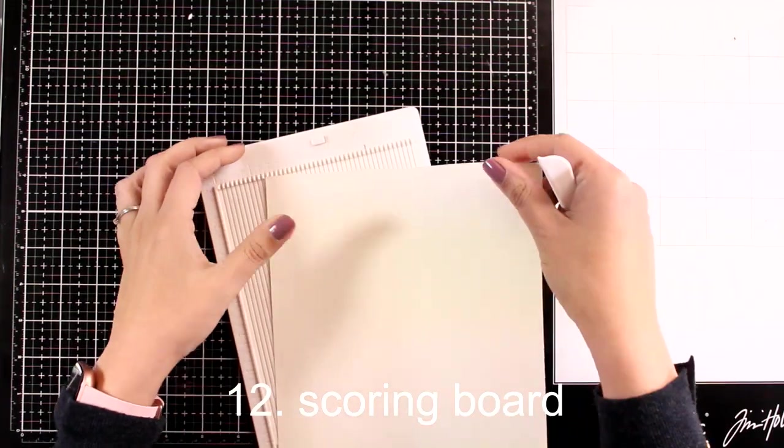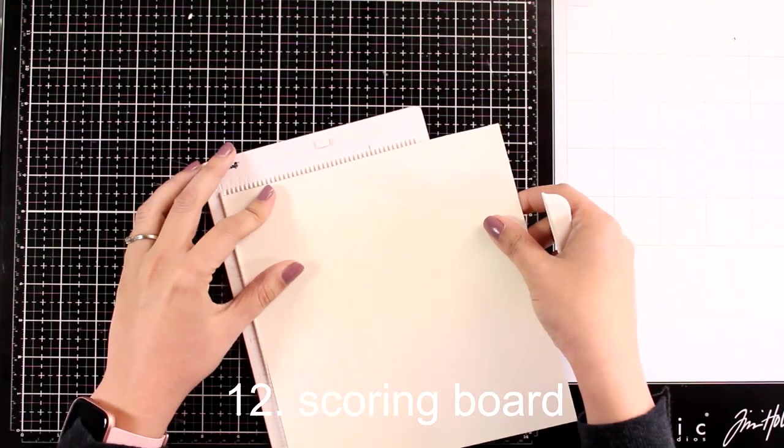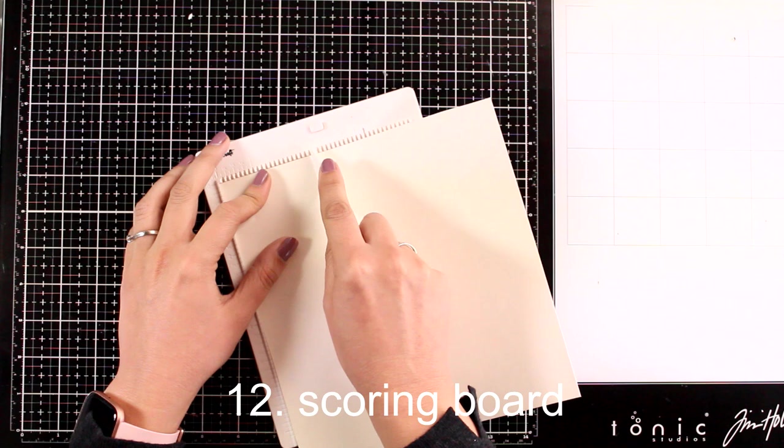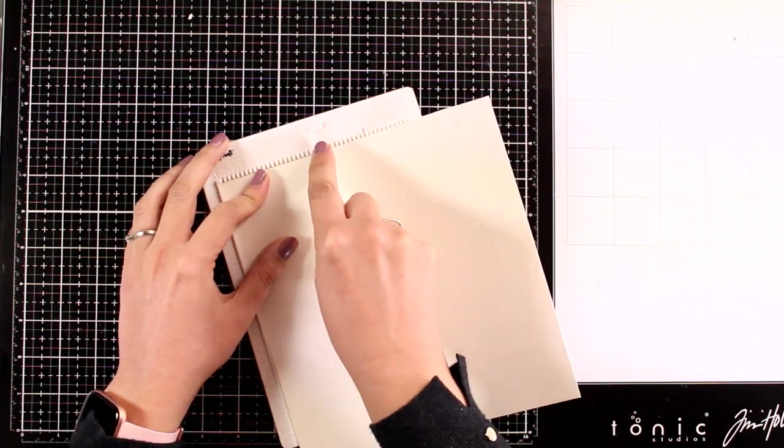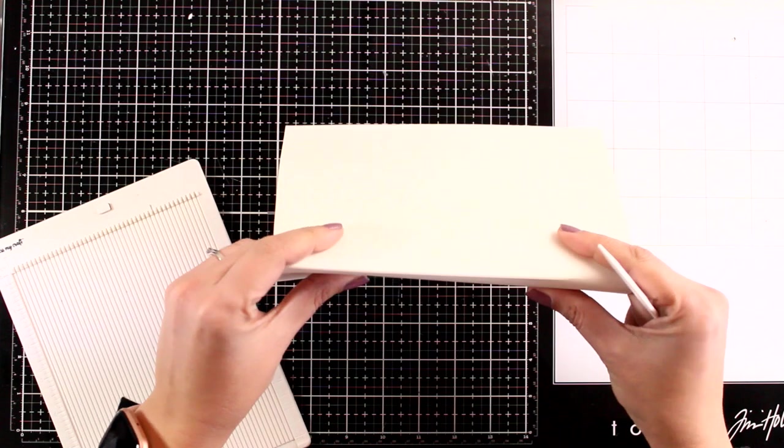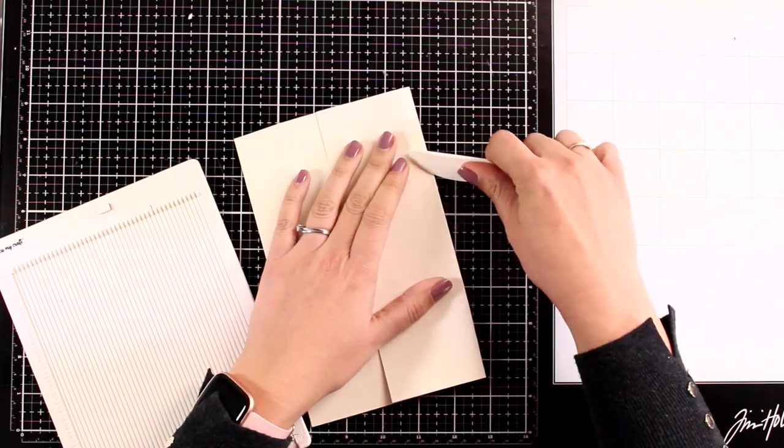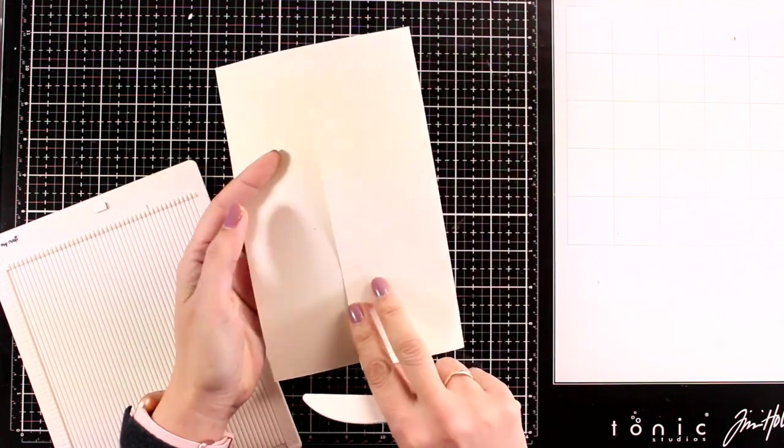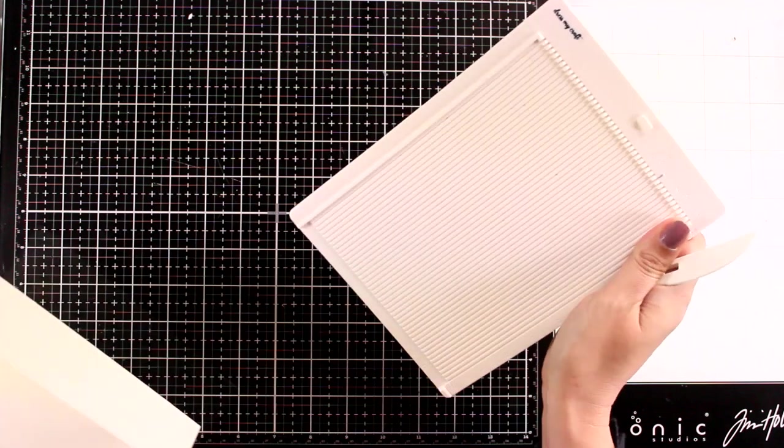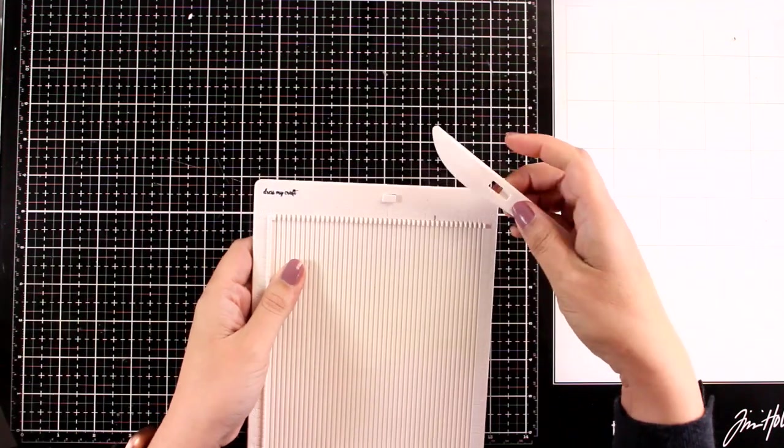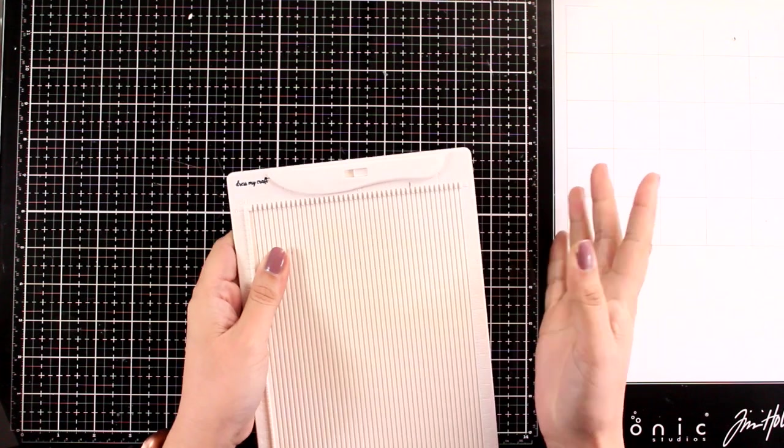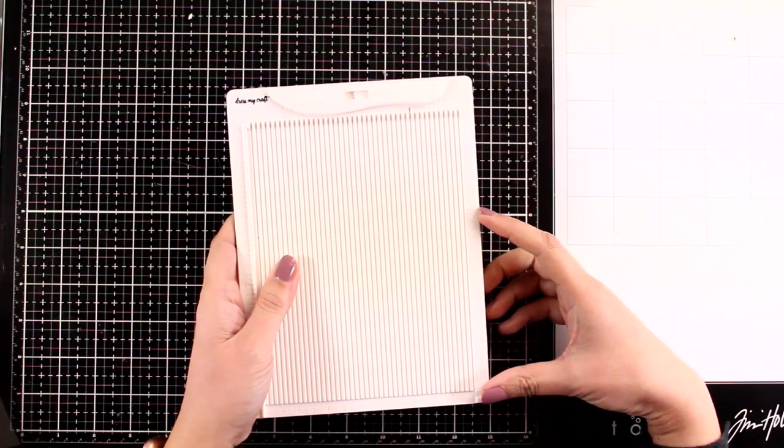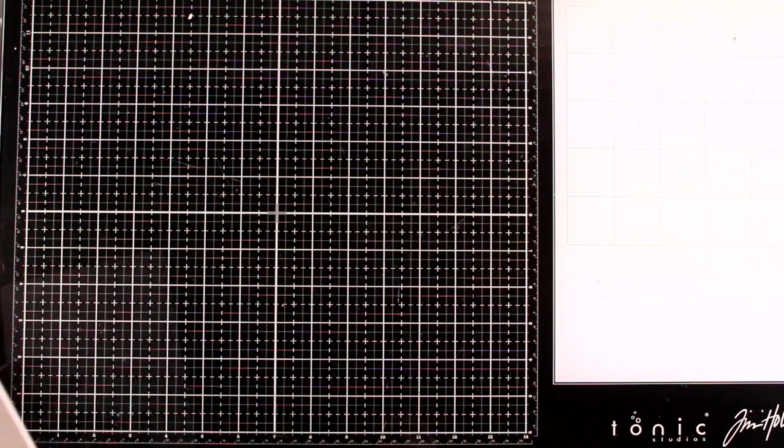Another must-have tool for card makers is a scoring board. You need that to create your very own card bases in any size, and the scoring board always comes with a bone folder. Using a scoring board gives your card bases that professional touch. I used to work with a 12x12 one but switched to this smaller one by Dress My Craft.